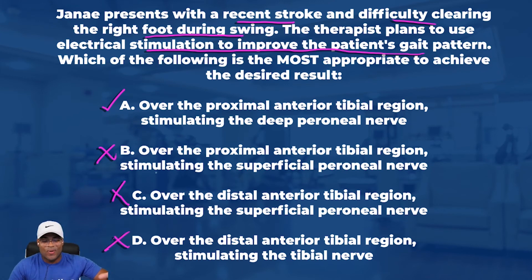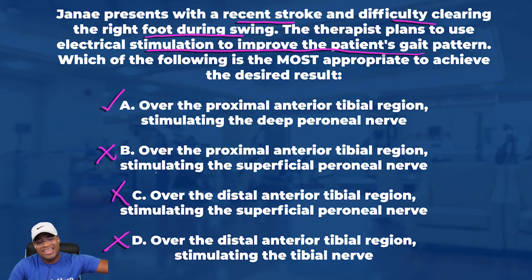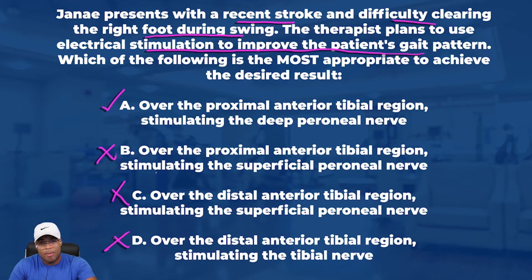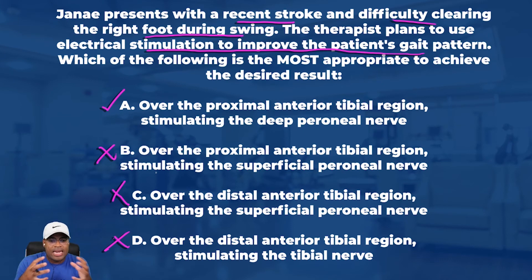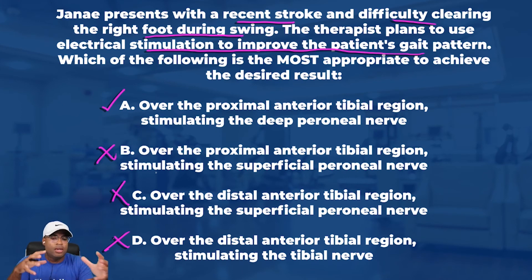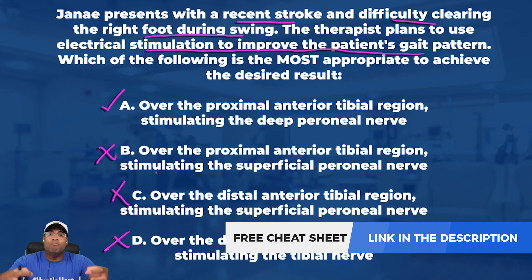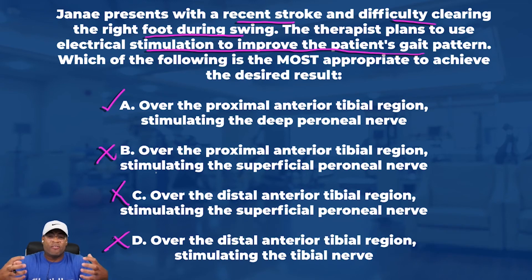That leaves us with our final answer of A: over the proximal anterior tibial region stimulating the deep peroneal nerve. For this question, we needed to know a bit about functional electrical stim and understand what nerve innervates the anterior tib in order to get that muscle to contract. The person was having difficulty clearing their foot during swing, so we knew we needed dorsiflexion.